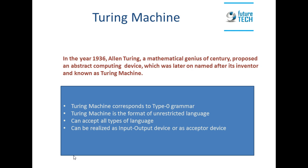Turing machine can be realized as an input-output device or as an acceptor device. When we consider Turing machine as an input-output device, we can get some output corresponding to some input. When we consider Turing machine as an acceptor device, it can accept a string belonging to some language.